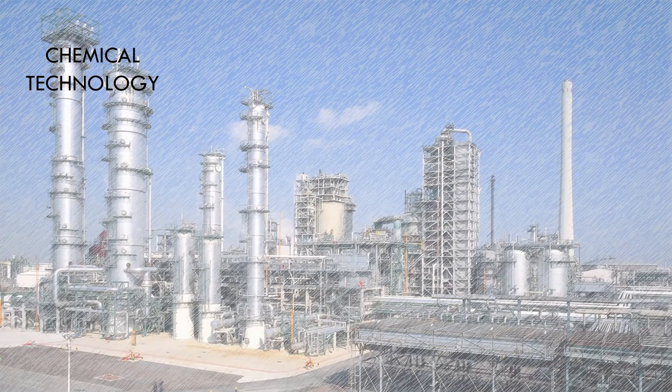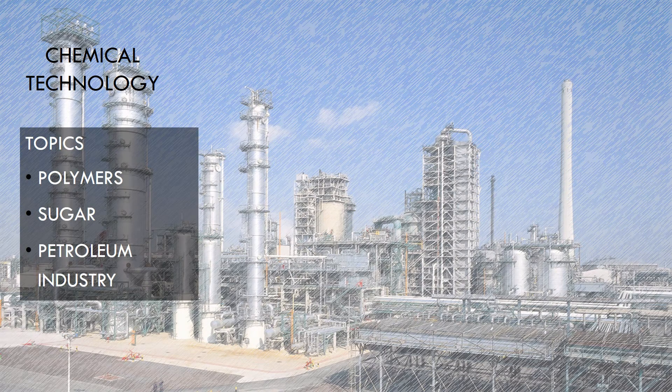In case of Chemical Technology, the questions were moderately difficult with topics involving polymers, sugar, and petroleum industry. Whereas in case of Process Design and Economics, the questions were relatively easier with topics from capitalized cost, cost index, and optimization, with the base score expected in economics from 4 to 5.